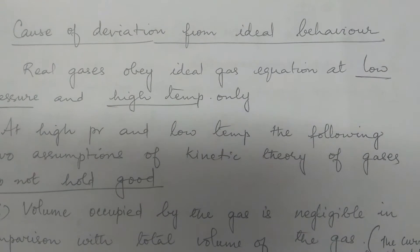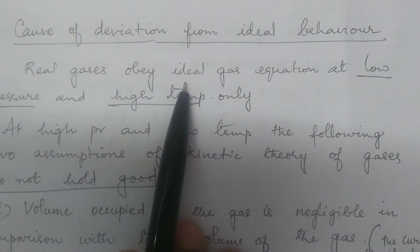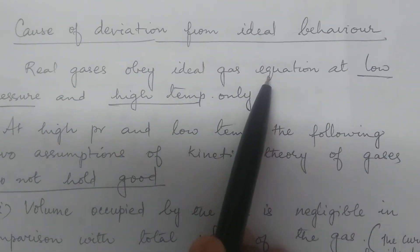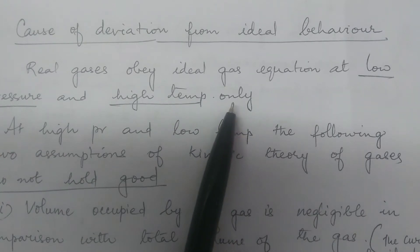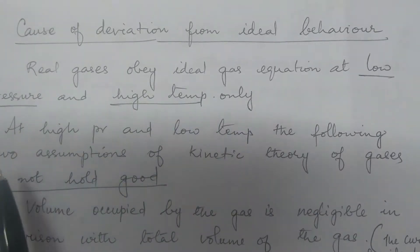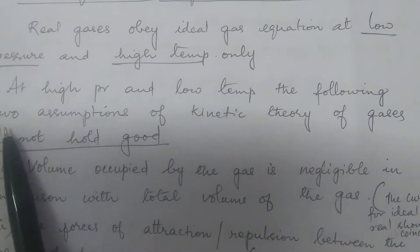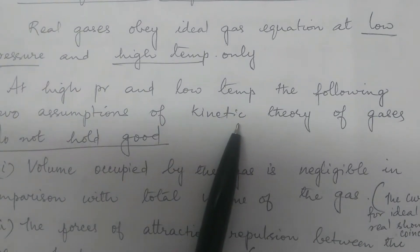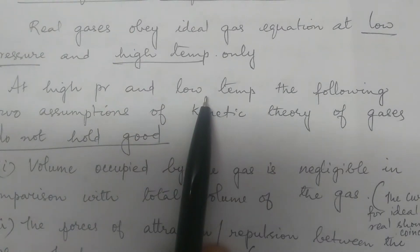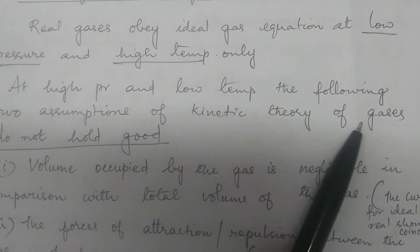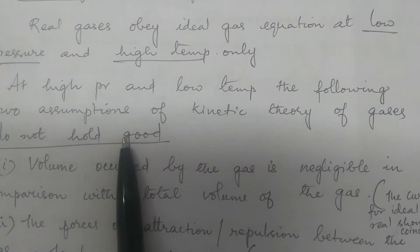Let us see what is the cause of deviation from ideal behavior. Real gases obey the ideal gas equation only at low pressure and high temperature. At high pressure and low temperature, the following two assumptions of kinetic theory are not holding good.